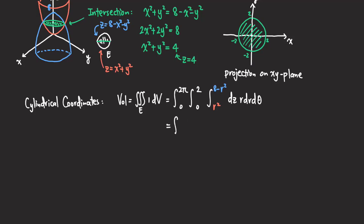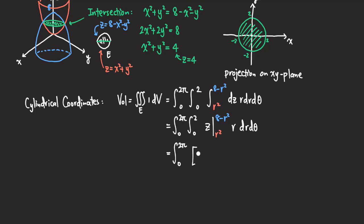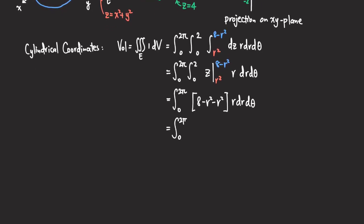Let's do the integration. First, integrate with respect to z — we evaluate z from r squared to 8 minus r squared, keeping r dr dθ. Plugging in the limits gives (8 minus r squared) minus r squared, which simplifies to 8 minus 2r squared. So we now have the integral from 0 to 2π and 0 to 2 of (8 minus 2r squared) times r dr dθ.